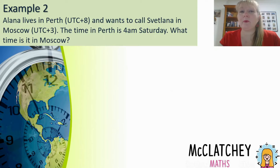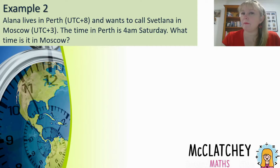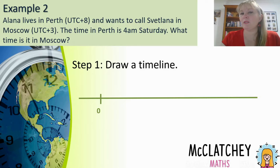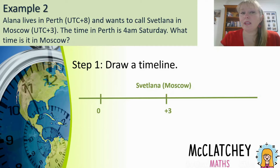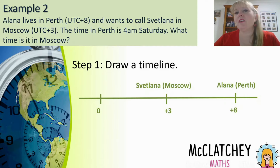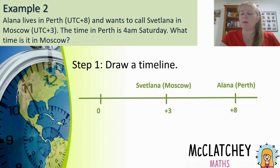Example two: Alana lives in Perth, UTC plus 8, and wants to call Svetlana in Moscow, UTC plus 3. The time in Perth is 4am on Saturday — what time is it in Moscow? Drawing our timeline with zero, and because both are on the positive side I've placed zero a bit further to the left. Svetlana is plus 3 UTC and Alana is UTC plus 8. Note: in our previous video I explained that GMT and UTC are treated exactly the same way for calculating time differences — if you see different letters, just use the numbers.